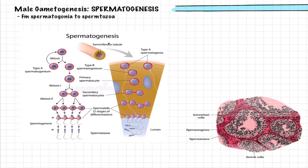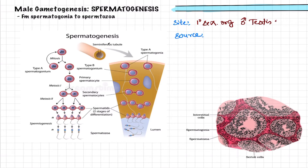The first question that arises is: what is the site of spermatogenesis, and what is the source from which sperms are being produced? As discussed in the previous video, spermatogenesis arises from the testis. The testis is the primary sexual organ — the characteristic feature of primary sexual organs is that they are gamete-producing organs. To be more specific, spermatogenesis is occurring in the seminiferous tubules.